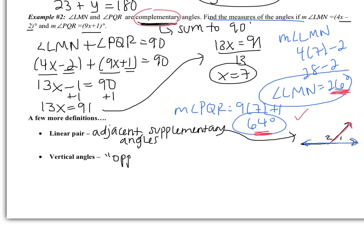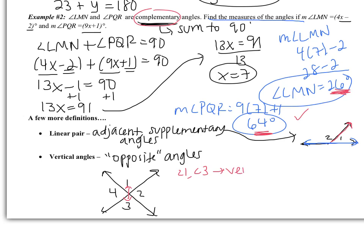Vertical angles are opposite angles. This is how we see vertical angles — when two lines cross, the angles opposite each other are vertical. Angle 1 and angle 3 are vertical angles, and angles 2 and 4 are also vertical angles because they are opposite. The angles next to each other form a linear pair: 1 and 2, 2 and 3, 3 and 4, and 1 and 4 are all linear pairs — they share a side and are supplementary.